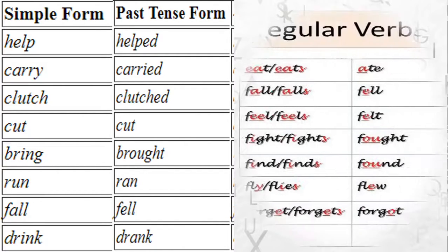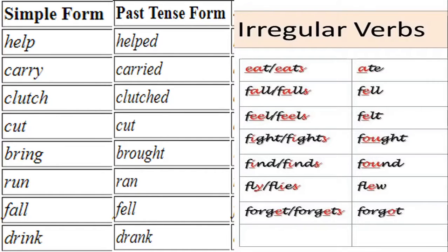Here are more irregular past tense examples. 'Eat' becomes 'ate,' 'fall' becomes 'fell,' 'feel' becomes 'felt,' 'fight' becomes 'fought,' 'find' becomes 'found,' 'fly' becomes 'flew,' and 'forget' becomes 'forgot.' So this covers our third point — the past tense forms of verbs.